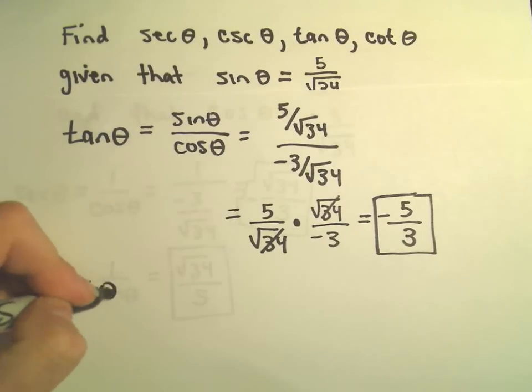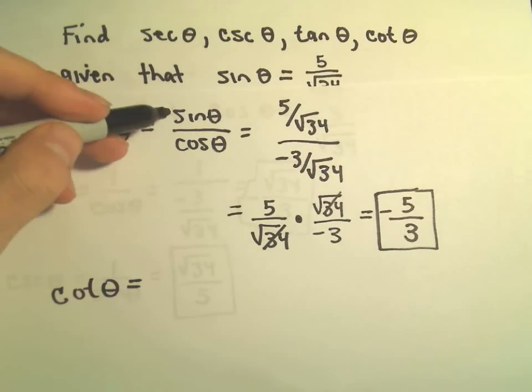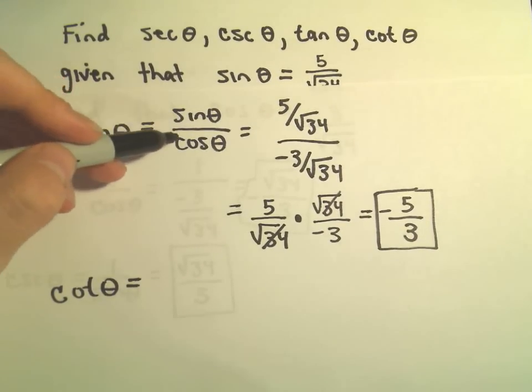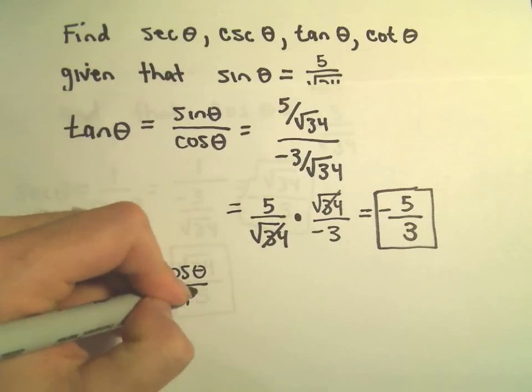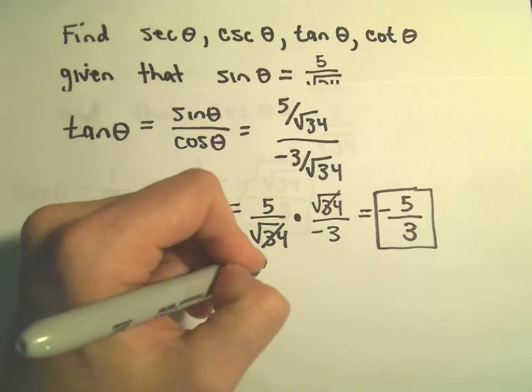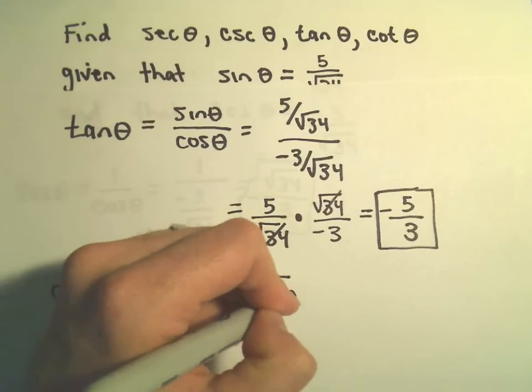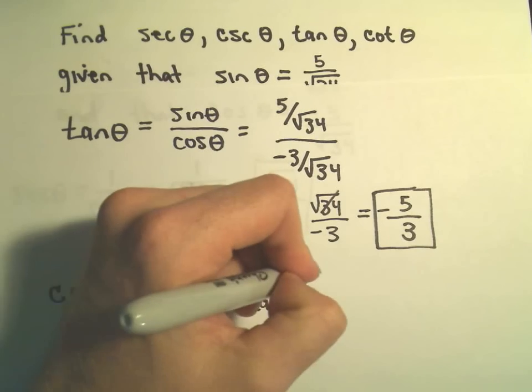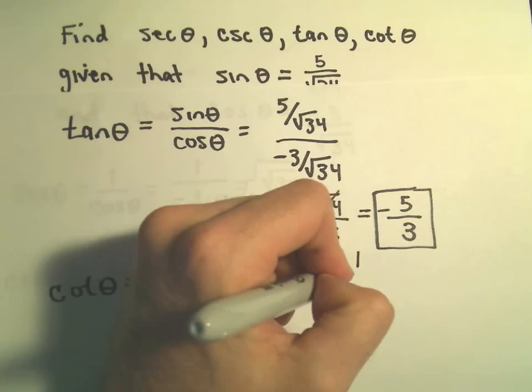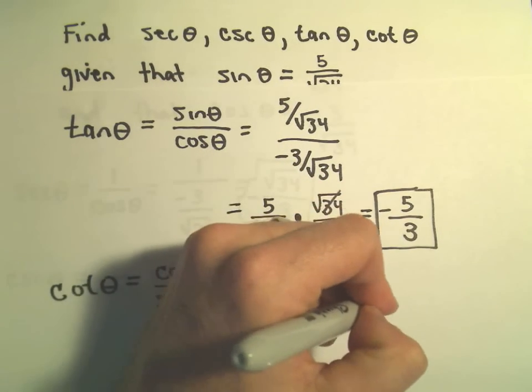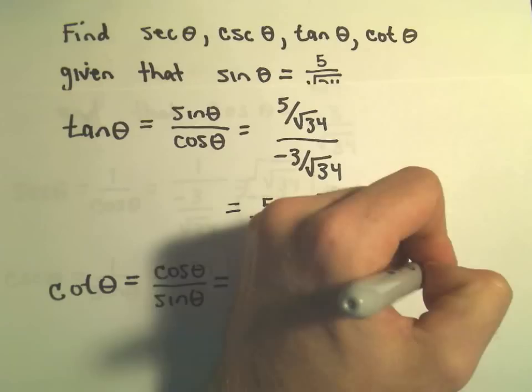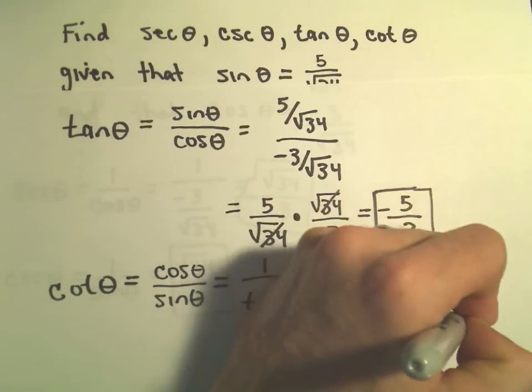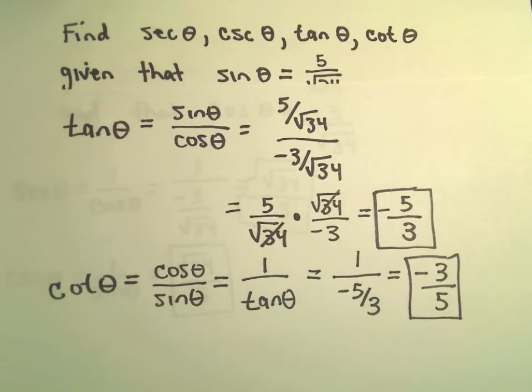To figure out cotangent of θ, we could take cosine θ over sine θ, but by definition, that's also the same thing as 1 over tangent of θ. We already figured out tangent of θ, so we'll just get 1 over -5/3, which is going to turn into -3/5. And now we know the value of cotangent θ as well.